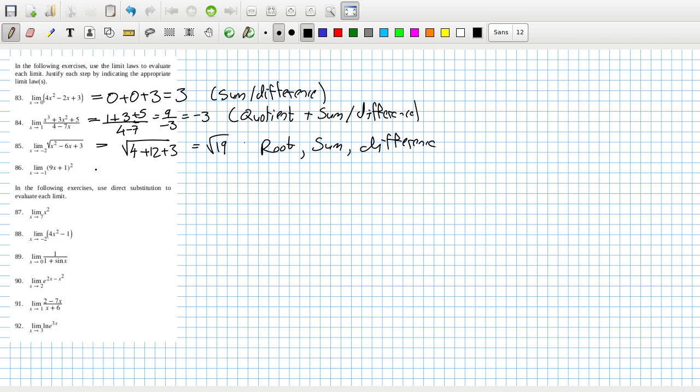This has got to be the power one and the sum one. Minus 9 plus 1 is minus 8, squared is 64. That is because of root and sum.